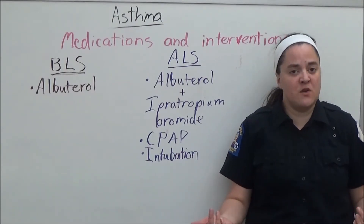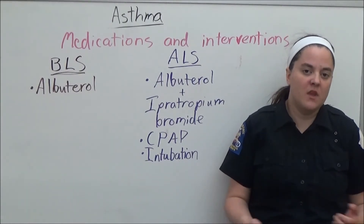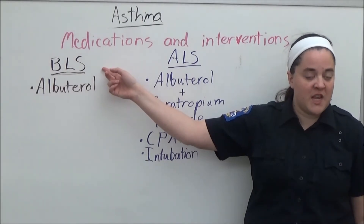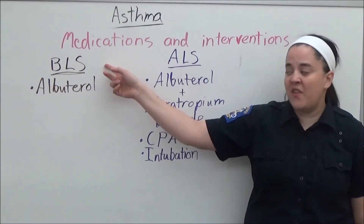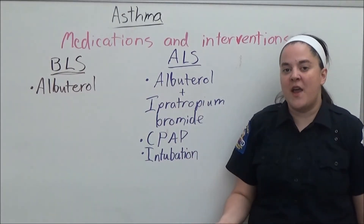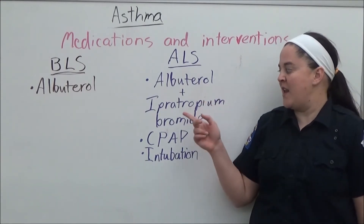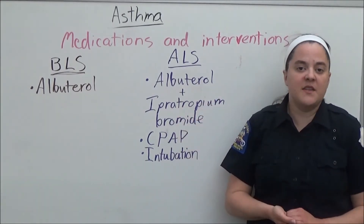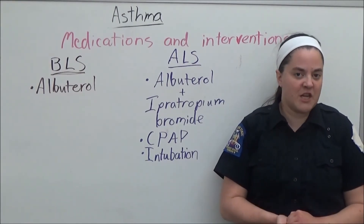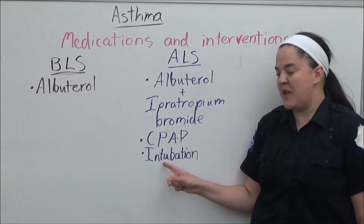Asthmatics often use an inhaler, but they may be on long-acting medication as well. In EMS, BLS providers can help the patient take their own medication and can also administer albuterol via nebulizer. ALS providers can administer a duo-neb with albuterol and ipratropium bromide. And in the case of a severe attack that's not responding to medication, the paramedic may apply CPAP or intubate the patient.